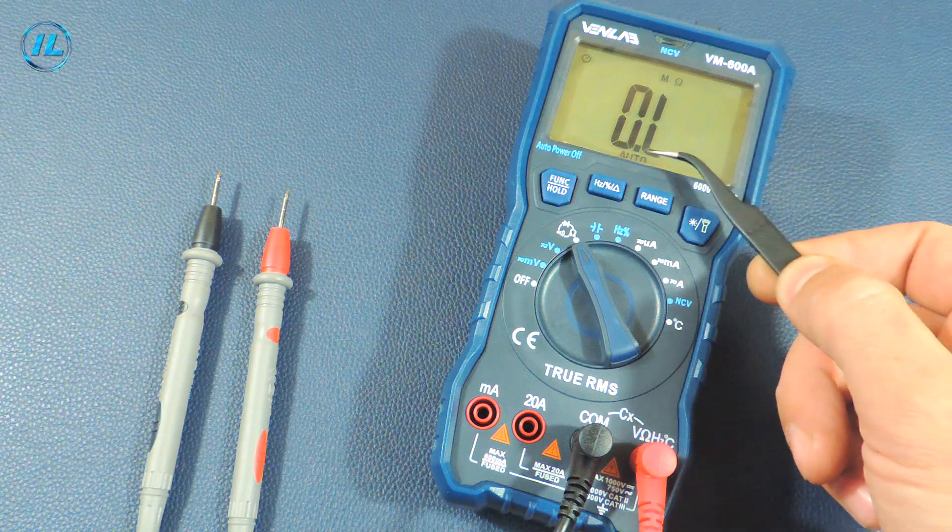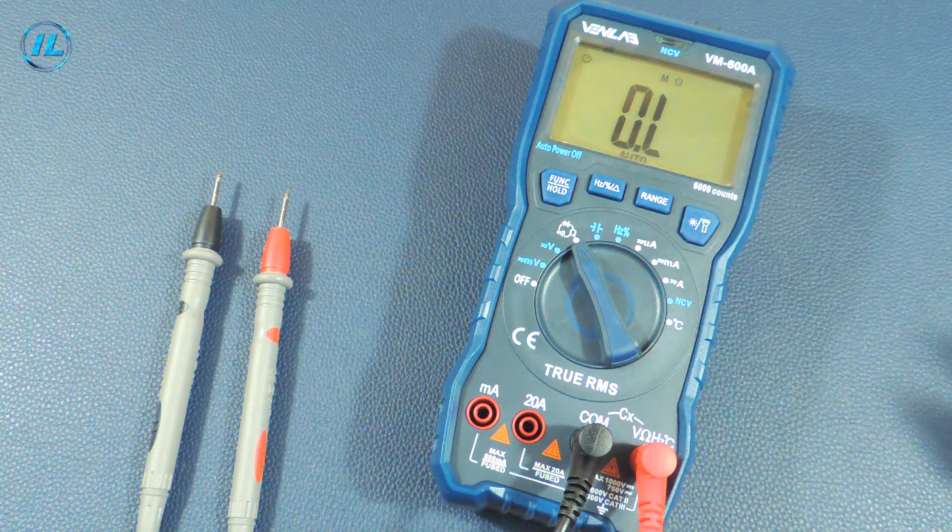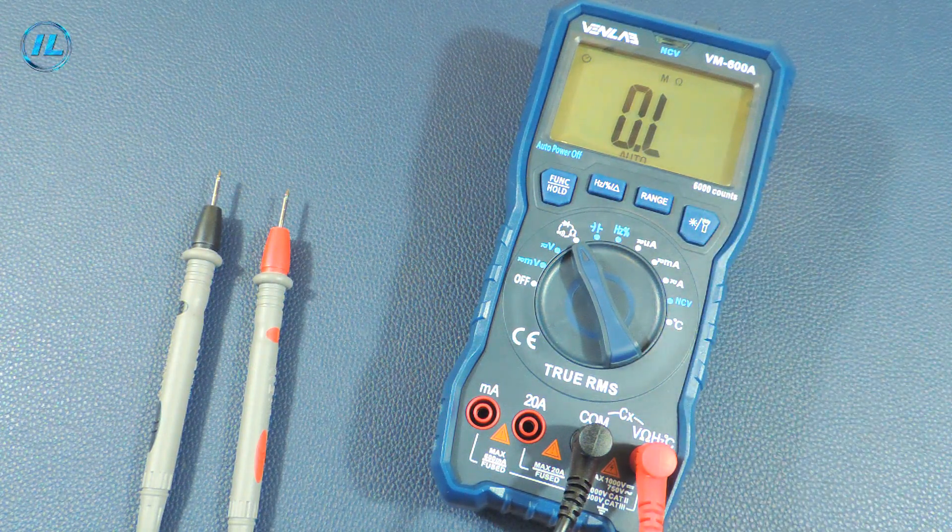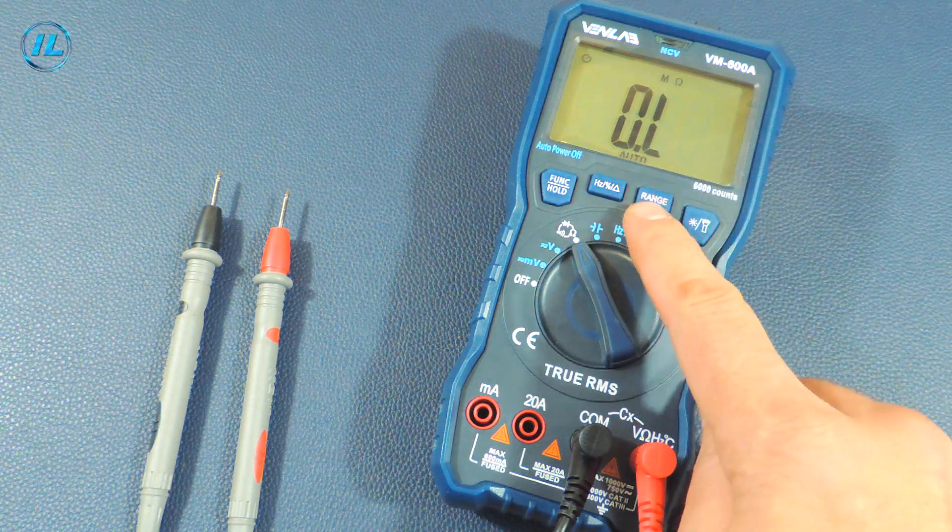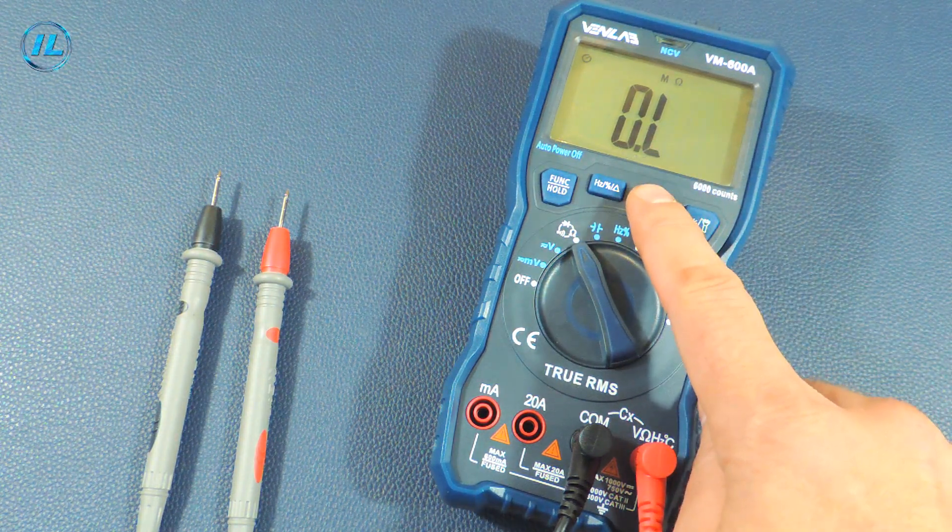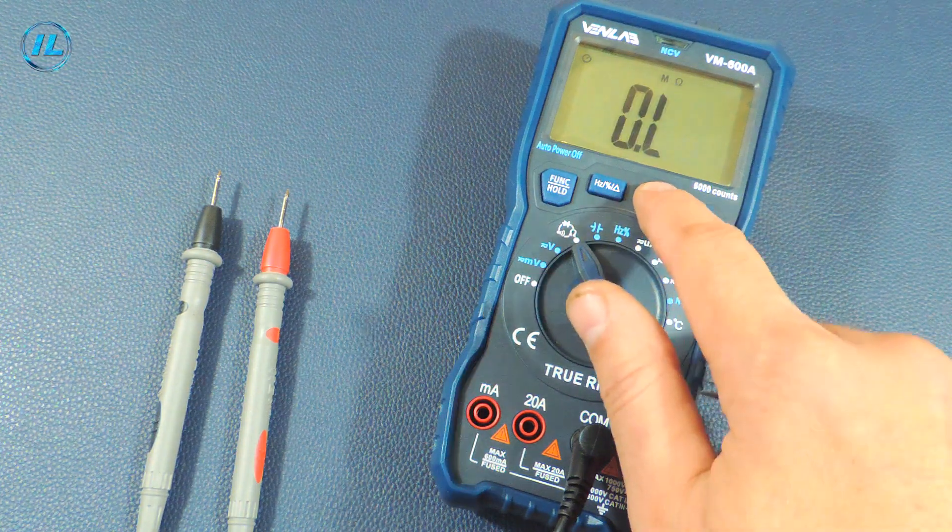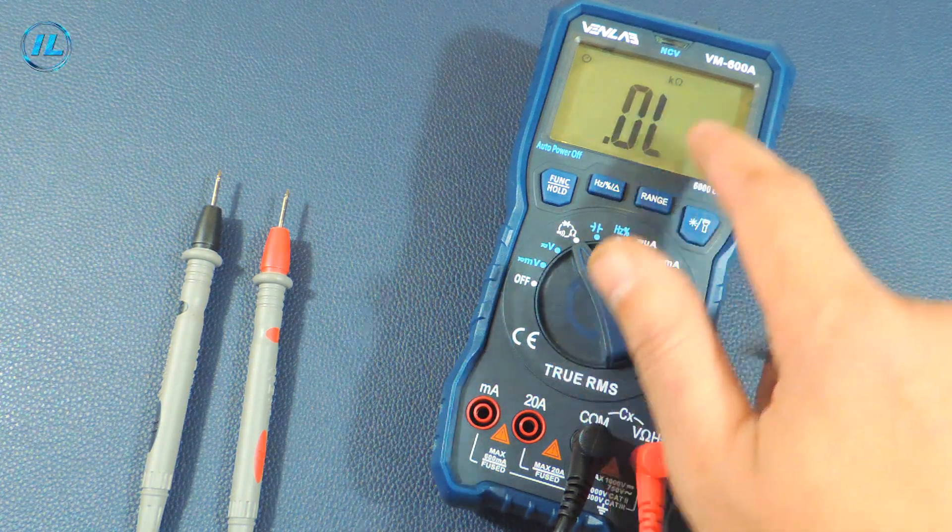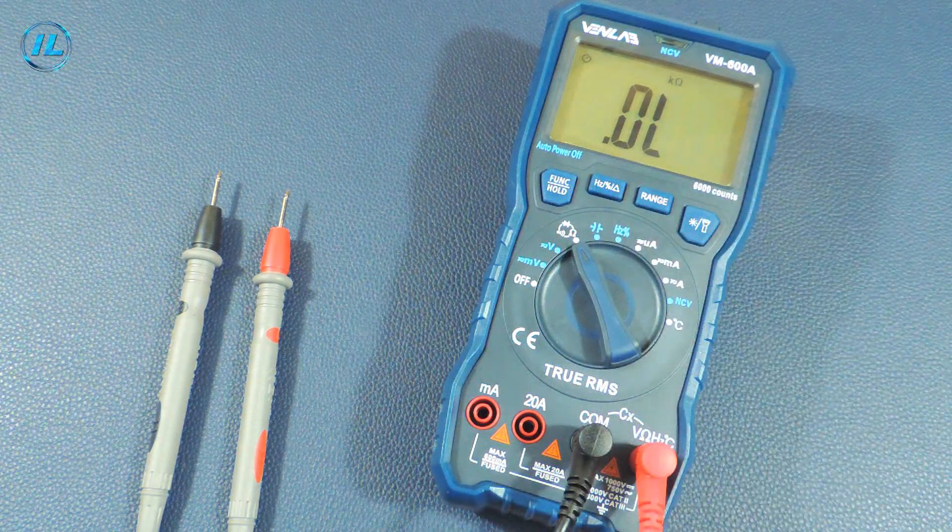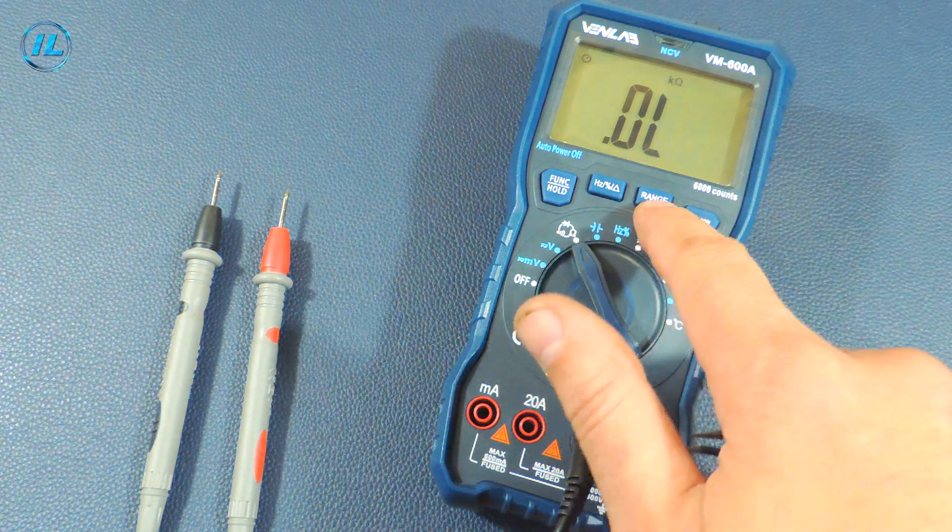Now the automatic mode is set, that is the device itself determines the desired measurement range. Using the range button you can manually change this range. Megohms, ohms, kilohms. To return to automatic mode you need to press and hold this button.